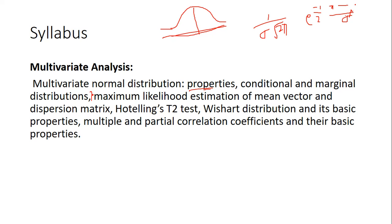...exponential of negative one-half times (x minus mu upon sigma) whole square. This is the PDF in the univariate case for the normal distribution. Here x lies between minus infinity to plus infinity, sigma is always positive, and mu lies between minus infinity to plus infinity.